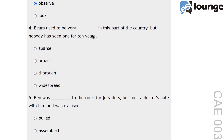Question 4. Bears used to be very blank in this part of the country, but nobody has seen one for 10 years. The options are sparse, broad, thorough and widespread. The correct answer is widespread. Widespread means found or distributed over a large area. For example, the disease was widespread in the area, indicating it was common. In this context, widespread describes how common bears used to be.